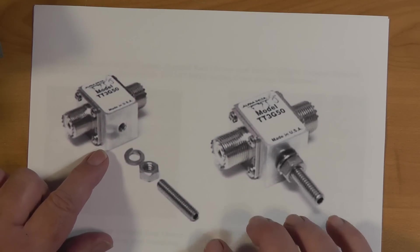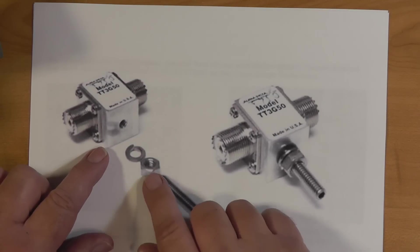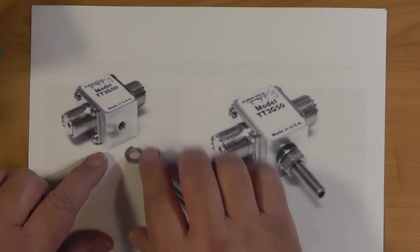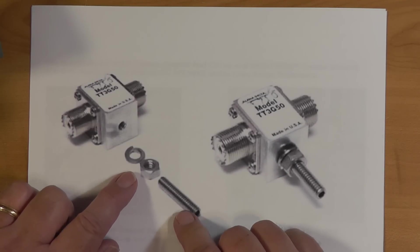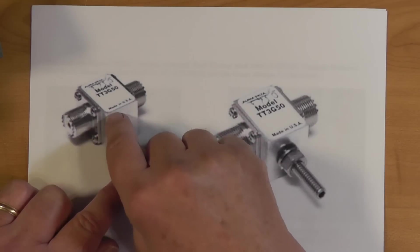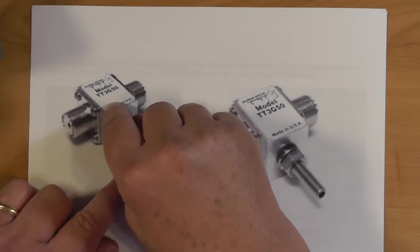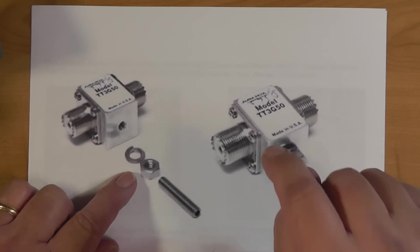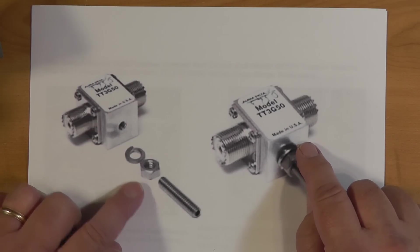This is technically a surge protector from Alpha Delta. These run maybe 60 bucks a piece, and you need one for every antenna lead that you've got going into the house. This should be the last thing the antenna cable sees before it goes into the house. And these are outside, they're not inside.